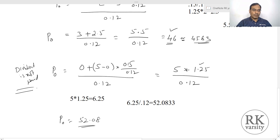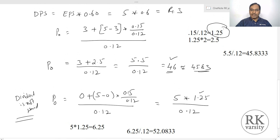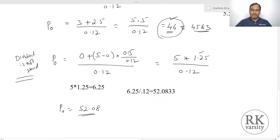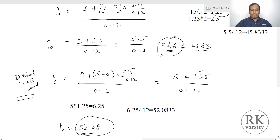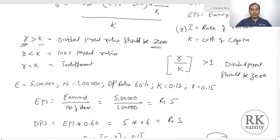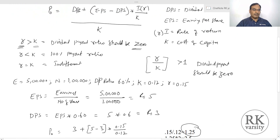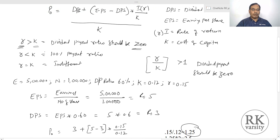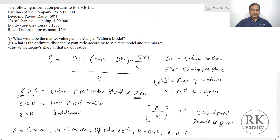So if dividend is paid at 60%, the price is ₹46. If the firm retains all profits and pays no dividend, the market price is ₹52. This proves that dividend policy has relevance. If a company's return on investment is greater than cost of capital, dividend payout ratio should be zero. If return on investment is less than cost of capital, 100% payout is ideal. If return on investment equals cost of capital, whether you pay a dividend or not is indifferent. This is the proposal made by Walter. Thank you for watching the lecture.